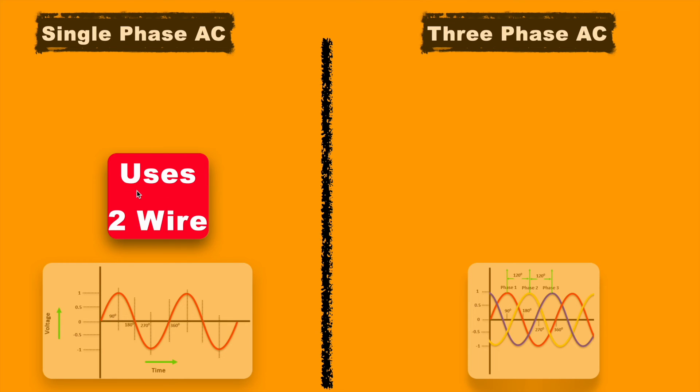Next, single phase power supply uses just 2 wires: phase and neutral. While the 3 phase power supply uses 3 wires in case of delta configuration and uses one more extra wire, neutral, in case of star configuration.